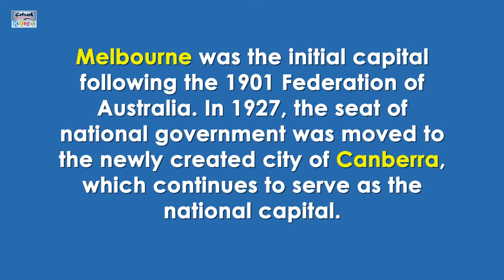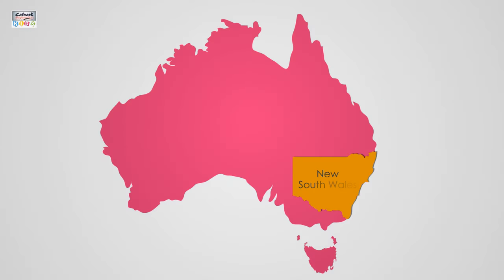So now let's learn the states and their capitals. New South Wales: the capital of New South Wales is Sydney and it has the population of 7,759,274.